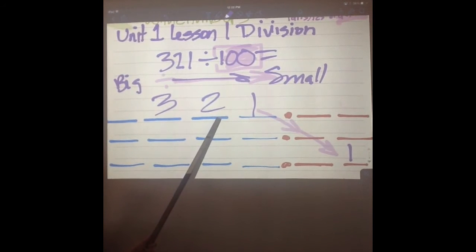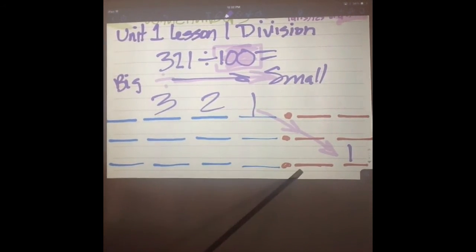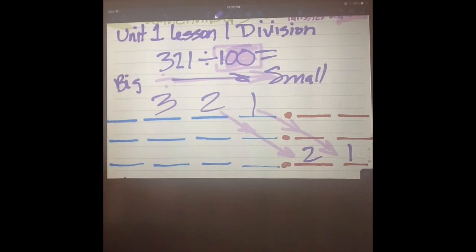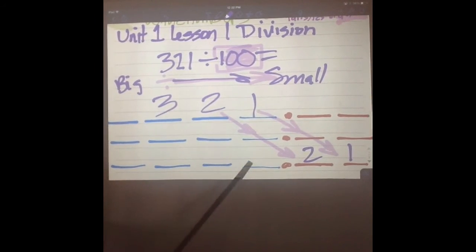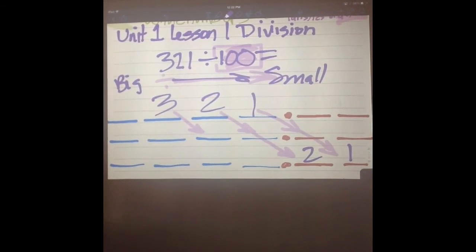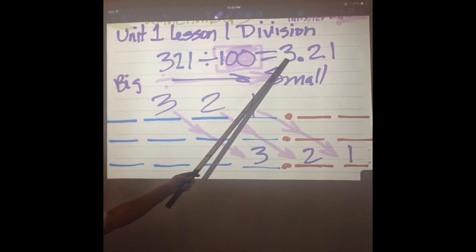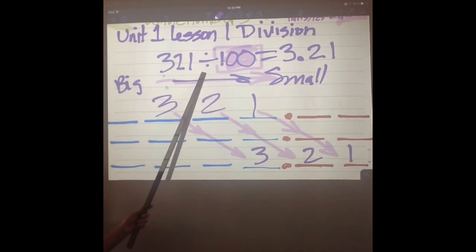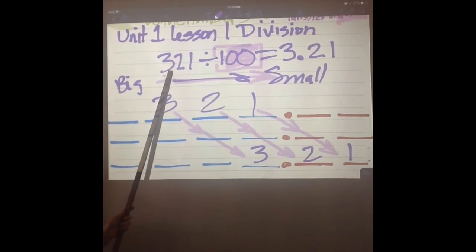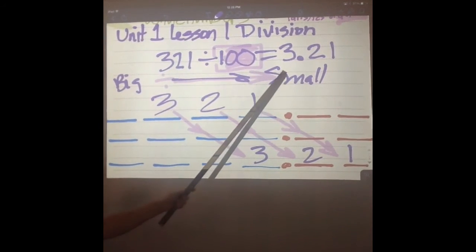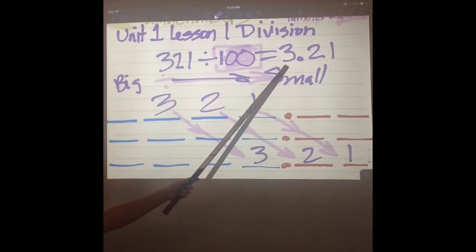What about the two? Shift it two times to the right. And how about the three? Shift it two spaces to the right, because our hundred has two zeros. Our answer to this problem is 3.21, or three point twenty-one. Is three a smaller number than three hundred twenty-one? Yes. We are going from a big number like 321 down to a much smaller number like three.